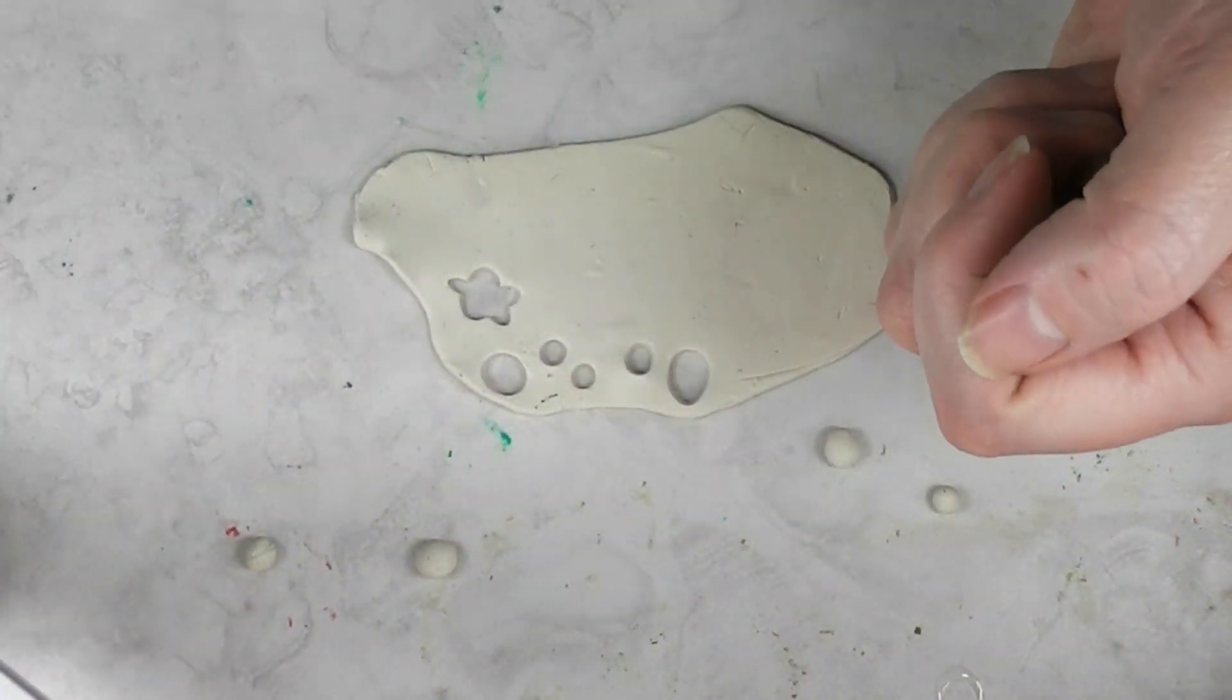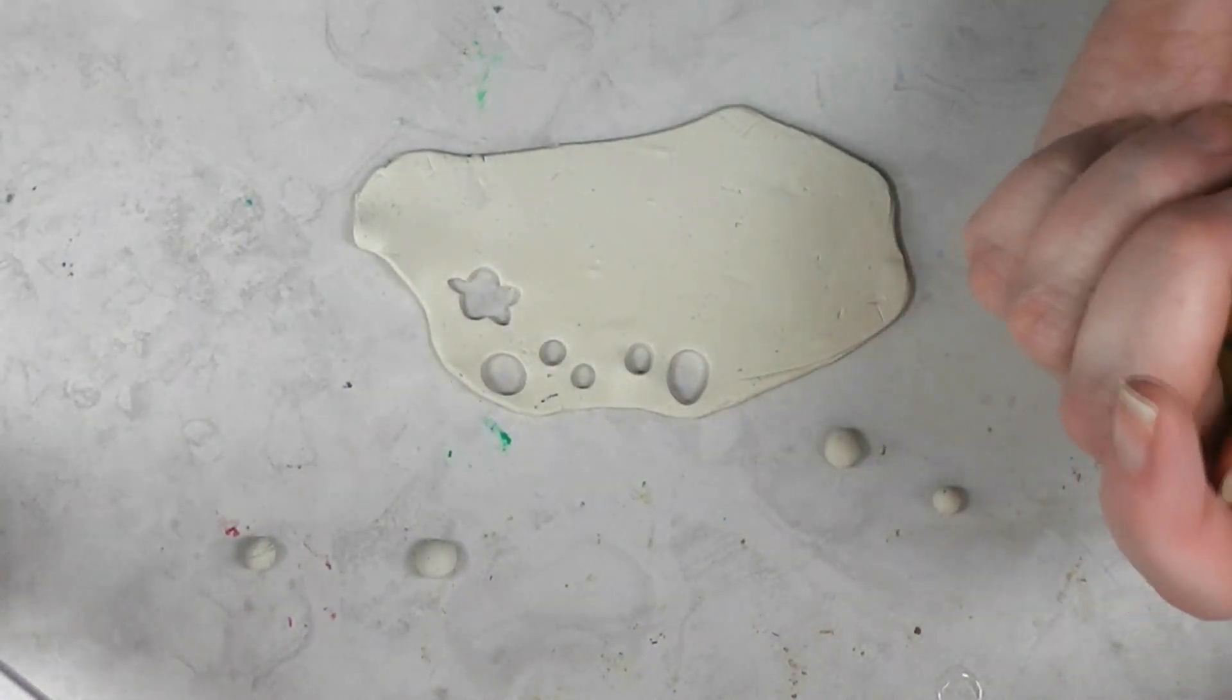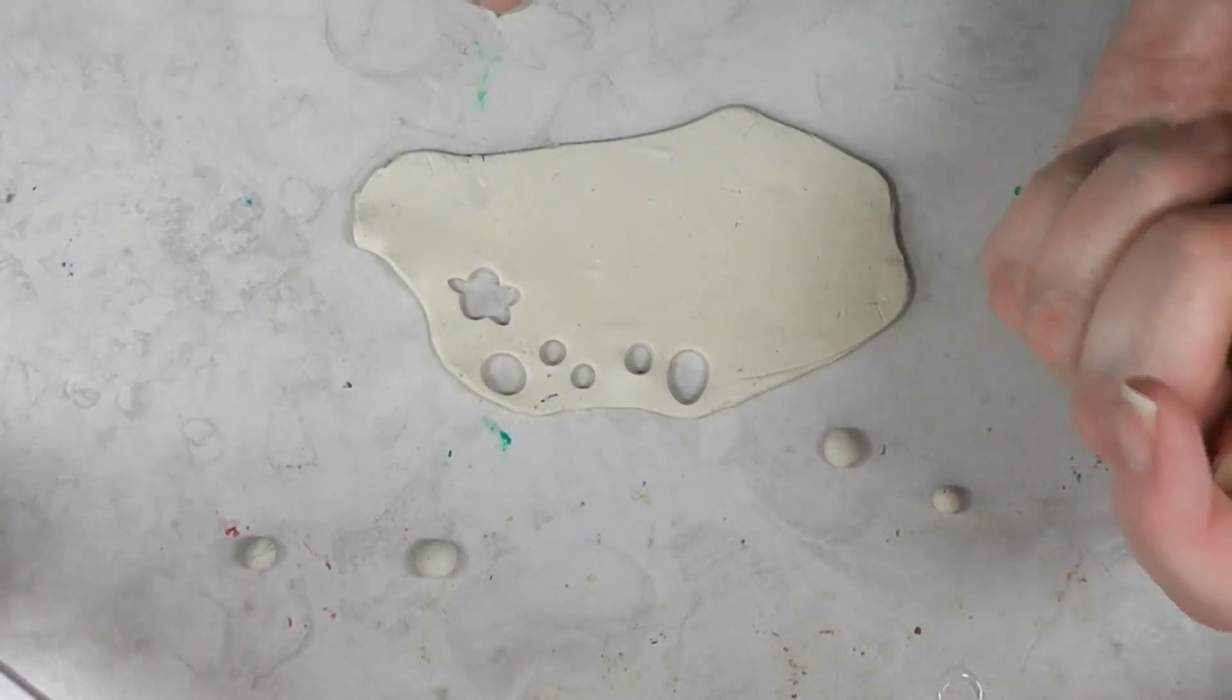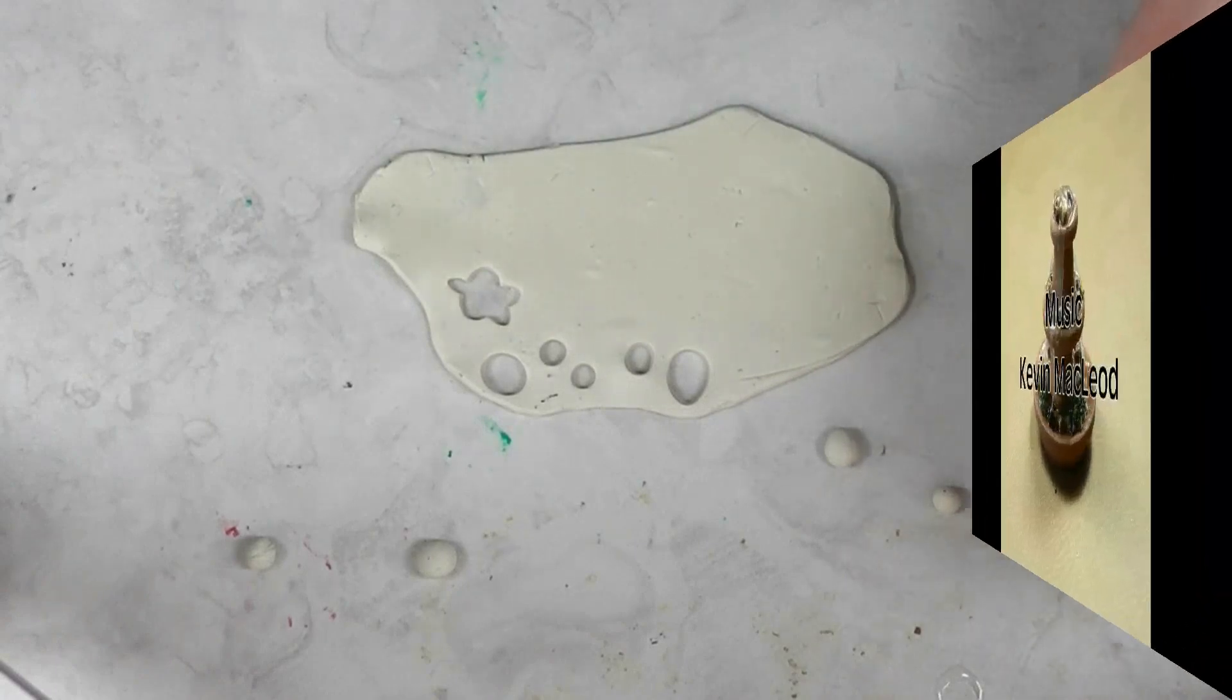So that's just a little bit on how you portion out clay to make your dollhouse miniature projects. I hope you found this useful. Be sure and check the blog post. Find me on Facebook and I'll talk to you later. Bye.